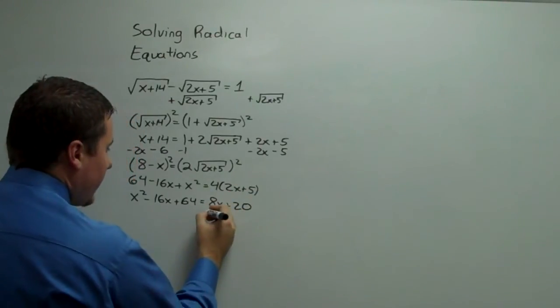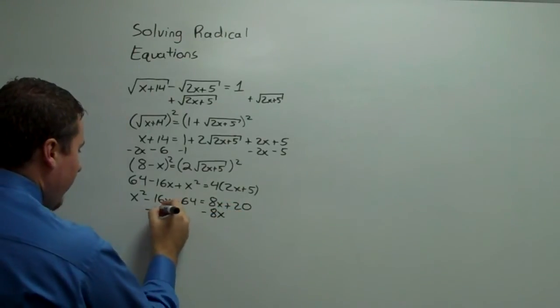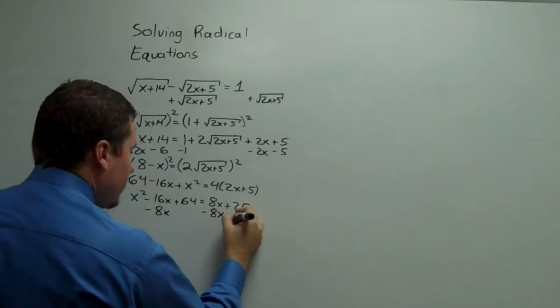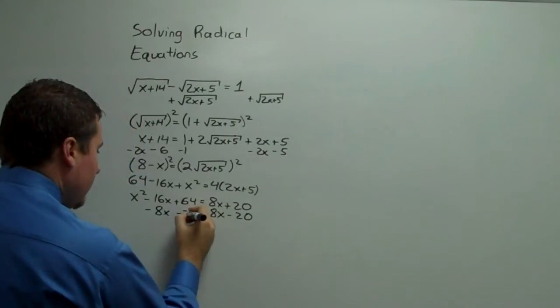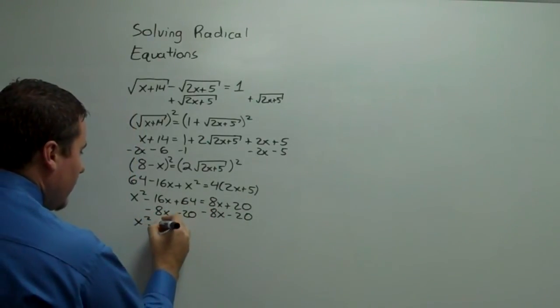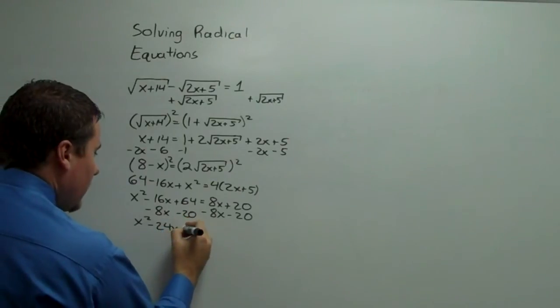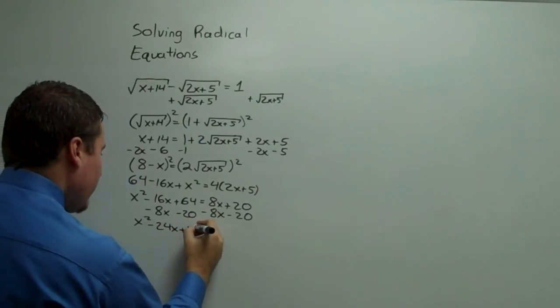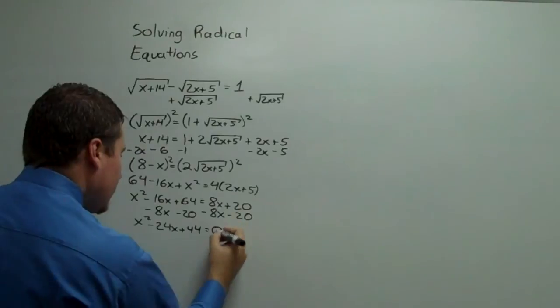Now we have to subtract 8x from both sides, and we have to subtract 20 as well. Again, we're setting equal to 0 for the 0 product property. x squared minus 24x plus 44 equals 0.